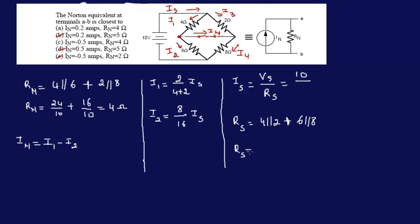So RS is 2 times 4 is 8, 4 plus 2 is 6. 6 times 8 is 48, 6 plus 8 is 14 - oh why did I write 16? 14, sorry. So RS is 8 over 6 plus 48 over 14. RS is 4.76 ohms.